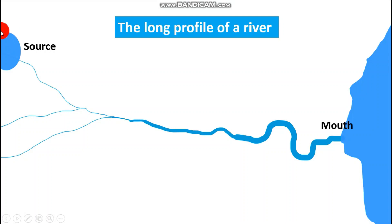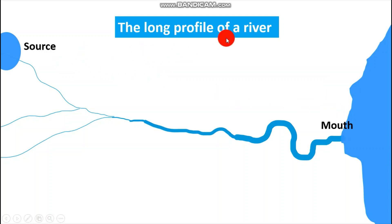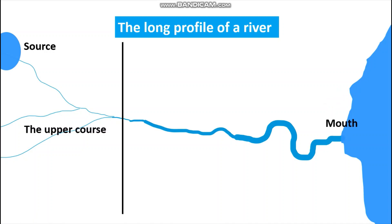The point at which the river begins forms the source of the river. Then the end point of the river is called the mouth. This is what we are referring to as the long profile of a river — from the source to the mouth. This profile is subdivided into the following sections.